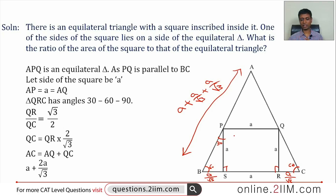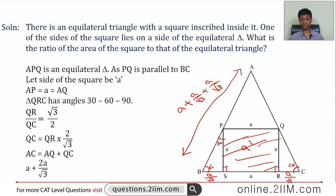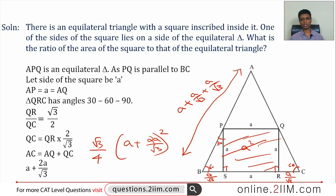We have now expressed the side of the equilateral triangle in terms of the side of the square. The area of the square is simply a². The area of the equilateral triangle is (√3/4) × (a + 2a/√3)², and we have expressions for both — all we need to do is simplify.